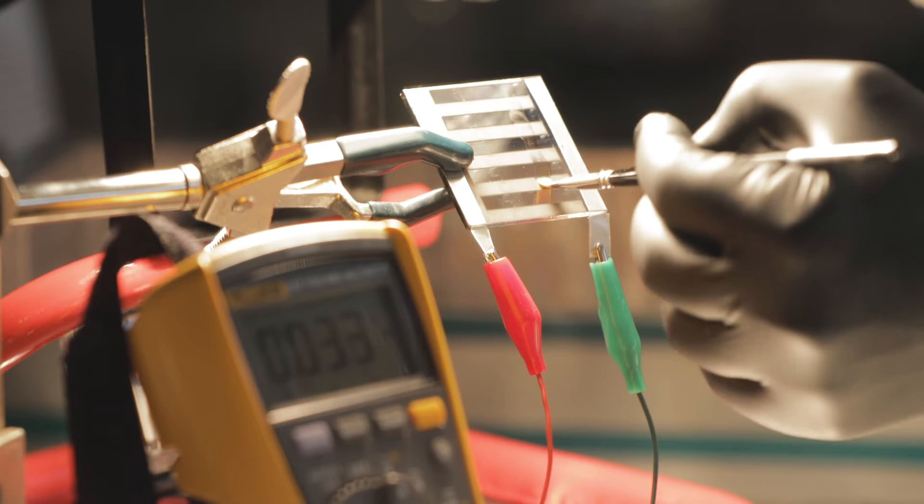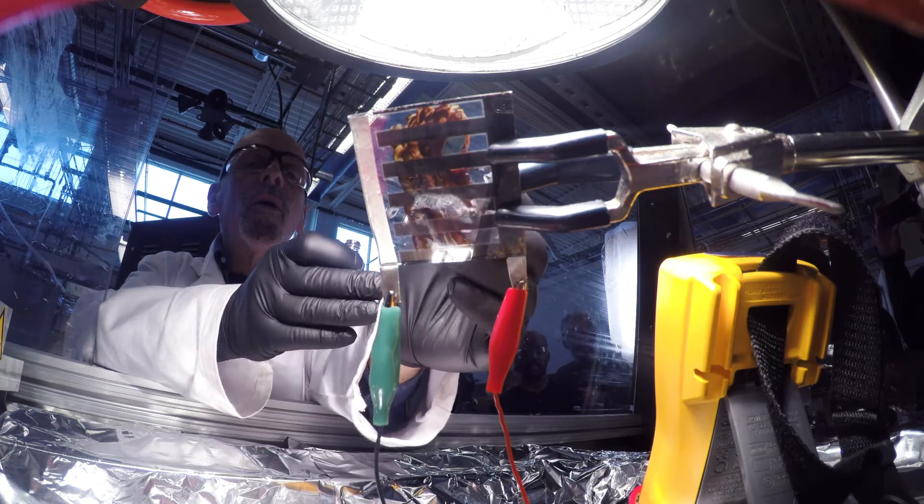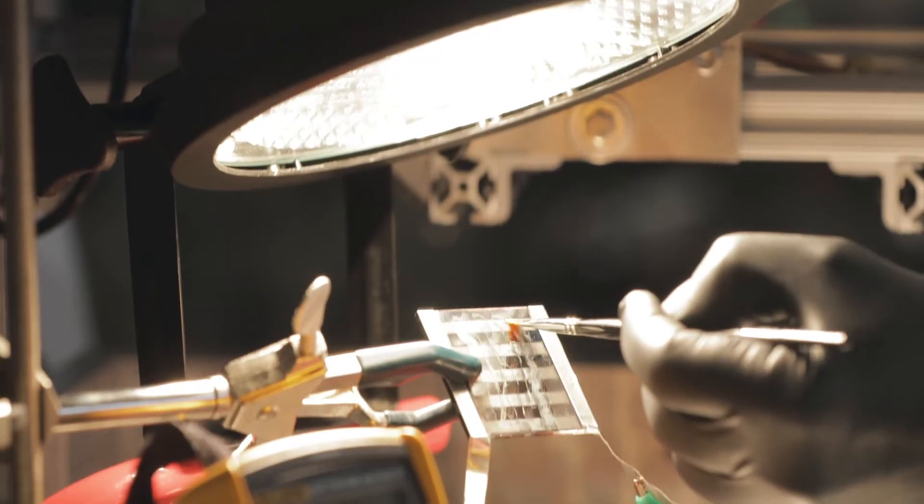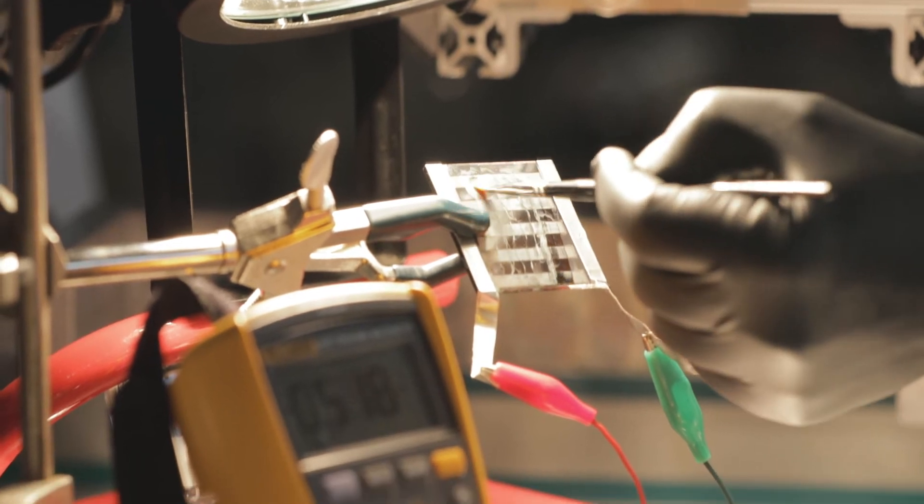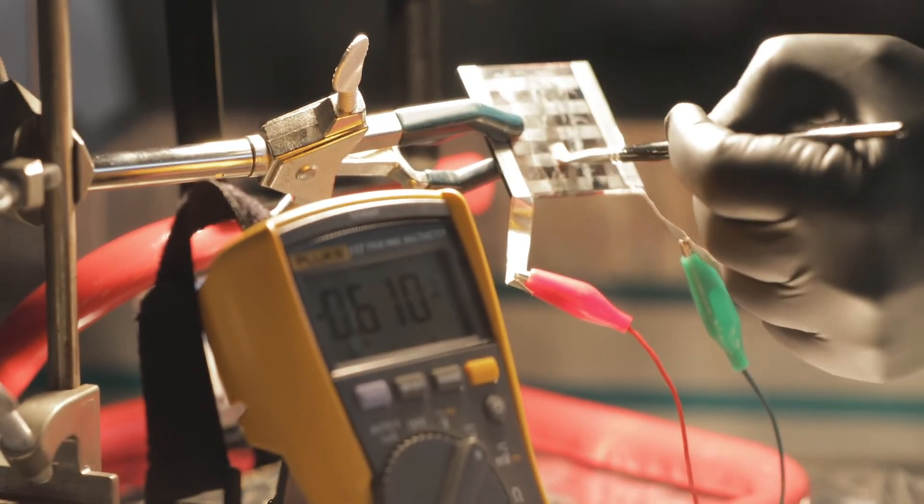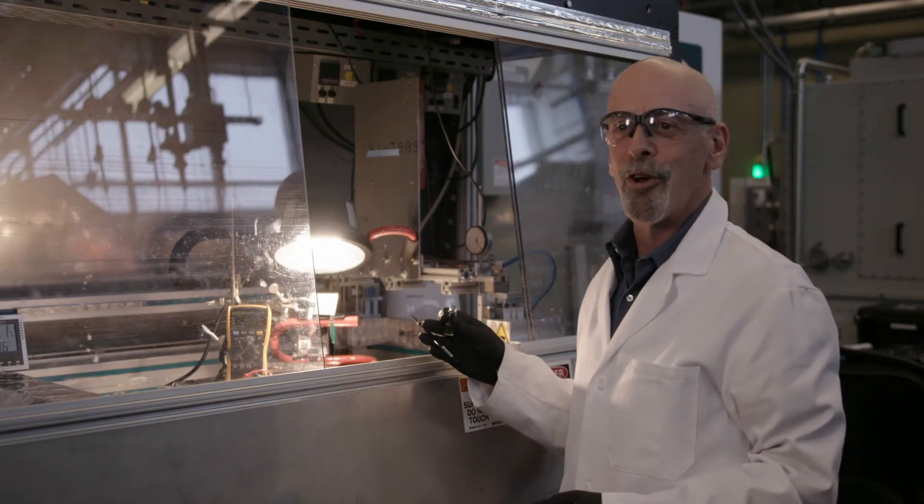If you watch the meter when we paint this on, we should get some voltage. You'll see that we have five hundred and six hundred millivolts of voltage out of our solar cell, and we've just painted on a solar cell.